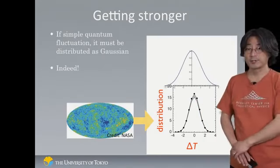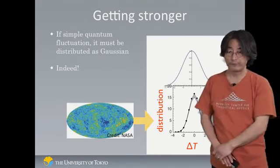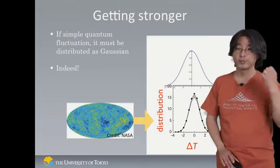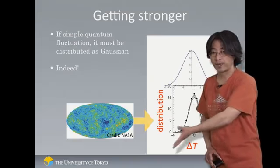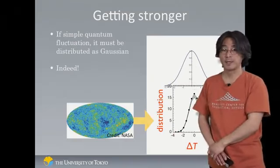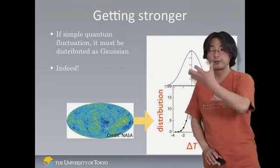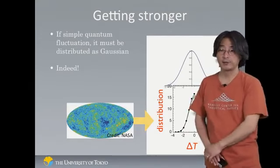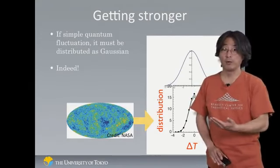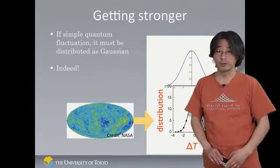So it looks like we have very good evidence now that inflation produced this quantum noise, and quantum noise eventually led to the temperature variation in the cosmic microwave background, and that temperature variation eventually led to the formation of stars and galaxies. So everything is now tied together. So we are born out of that quantum noise, it seems.